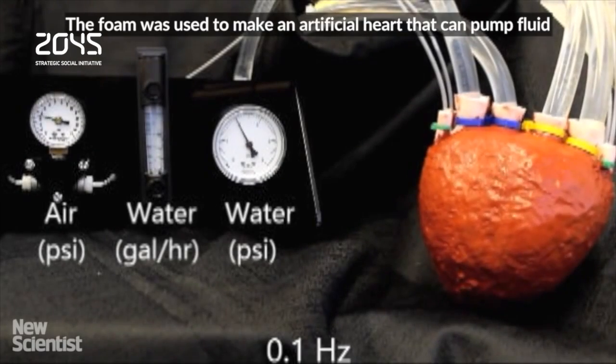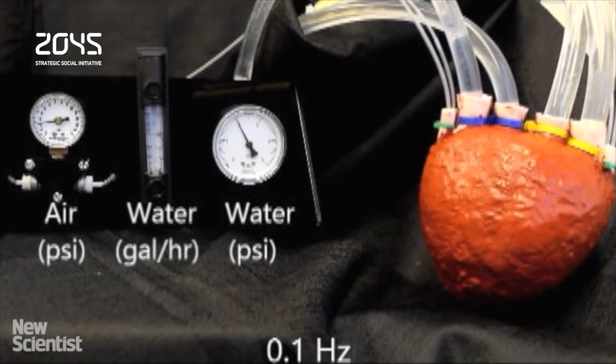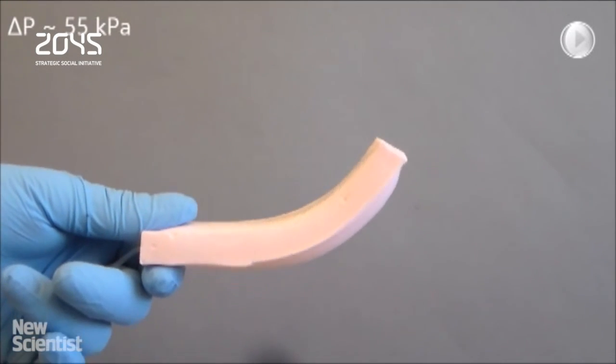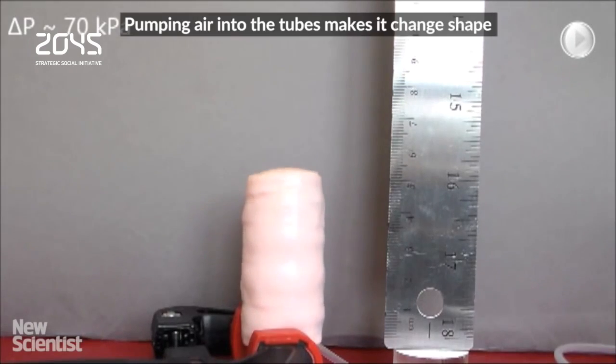It only has two chambers, as opposed to our four, but powering the heart with air makes it flex and pump water between them. But the foam heart doesn't visibly beat on the outside because the plastic skin means all the expansion happens internally.